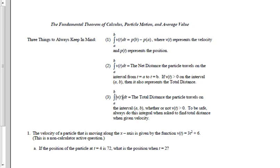Let's look at Example 1. The velocity of a particle that is moving along the x-axis is given by the function v(t) = 3t² + 6. If the position of the particle at time equals 4 is 72, what is the position when t equals 2?